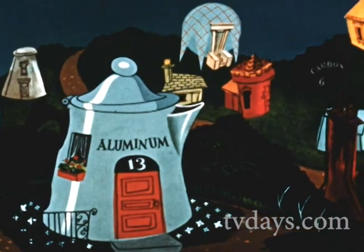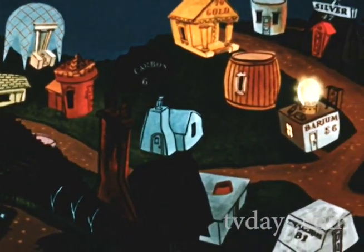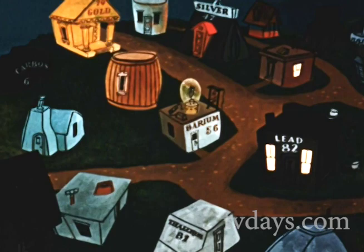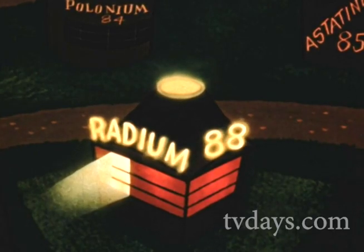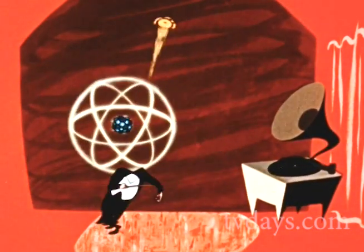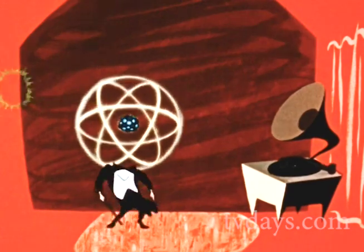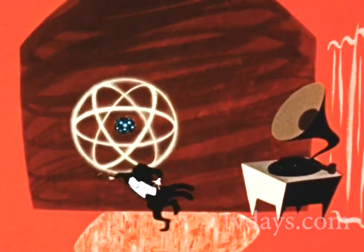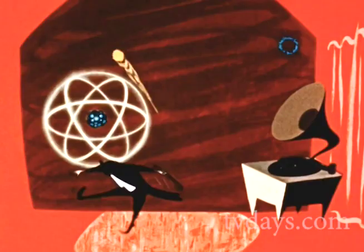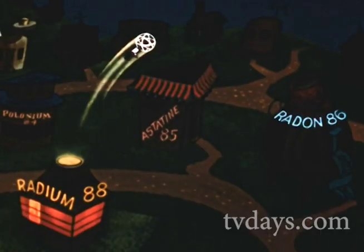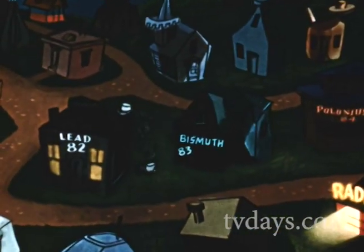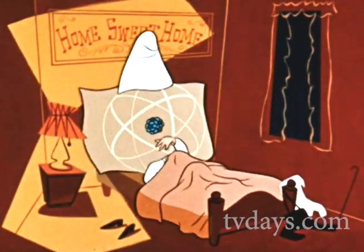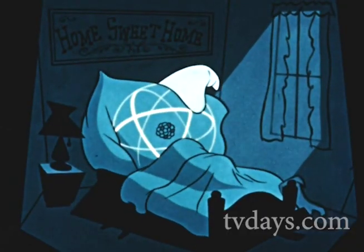Now, most atoms of most elements are content with their lot in life. We speak of them as being stable. But others are busy day and night, being what science calls radioactive. Like radium, throwing off powerful rays along with some of its neutrons and protons, until it actually alters its own nuclear structure. And changes to another family. And then to another, until it does become stable at last. This spontaneous changing of elements is called natural transmutation.